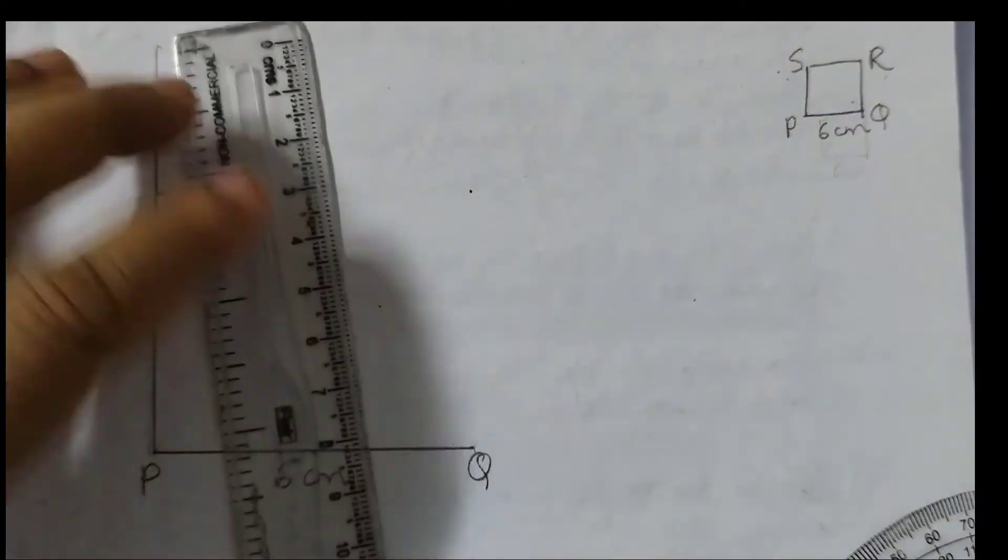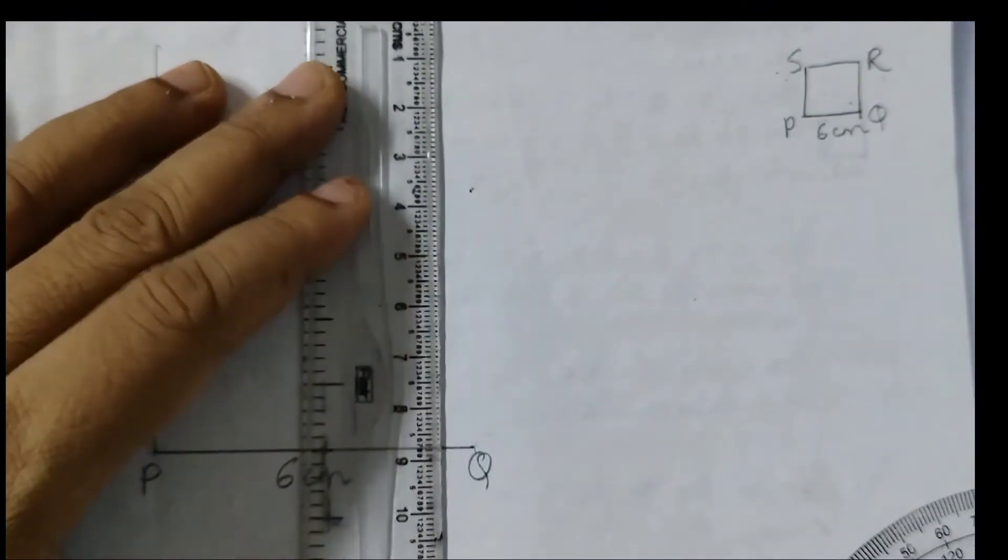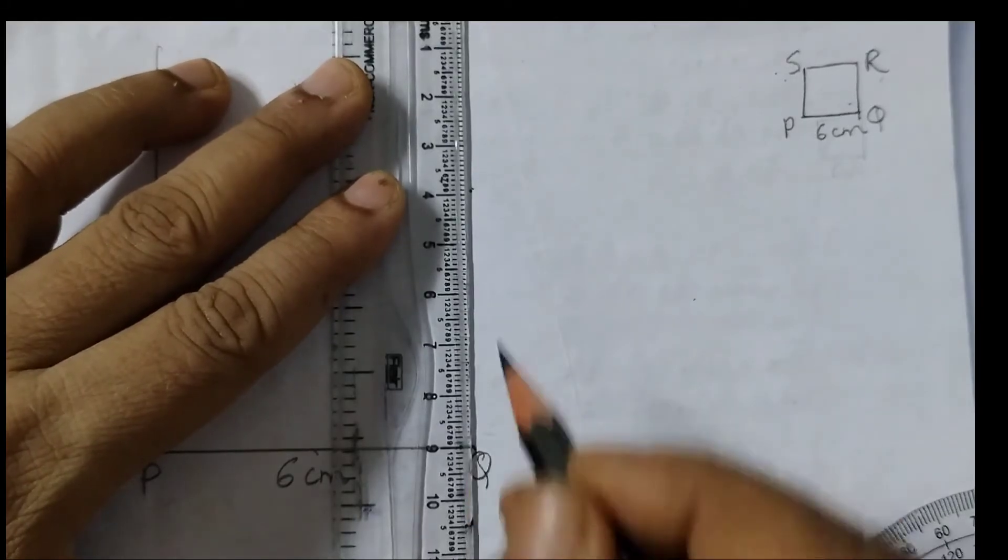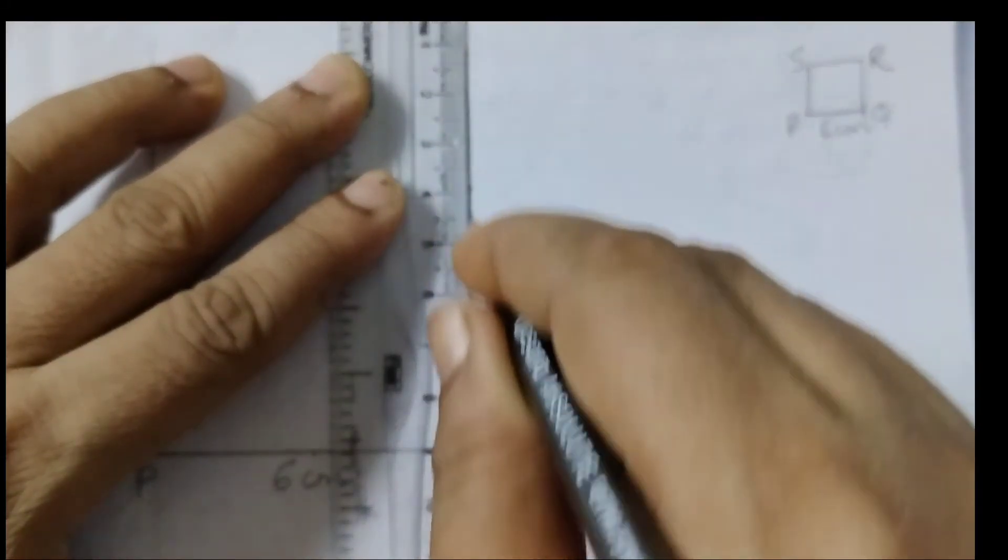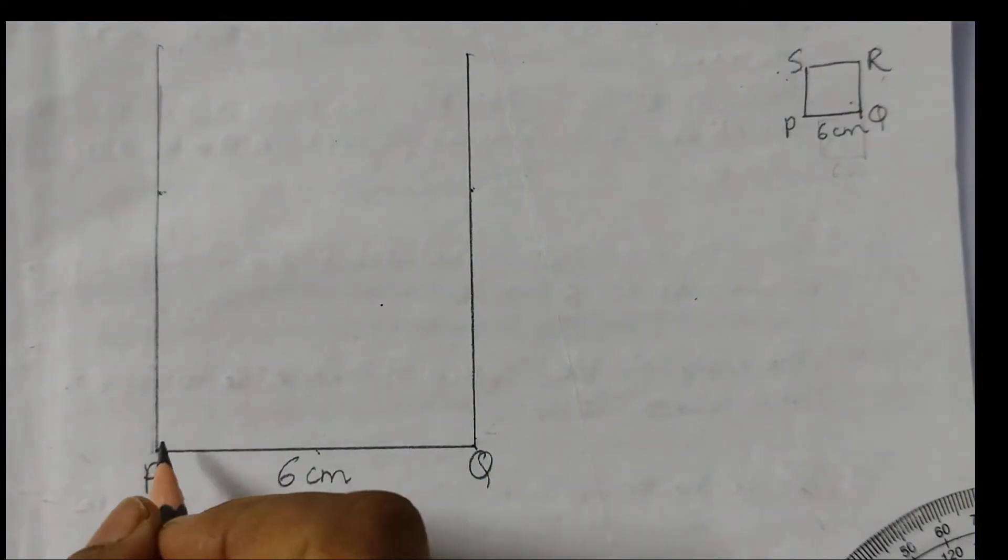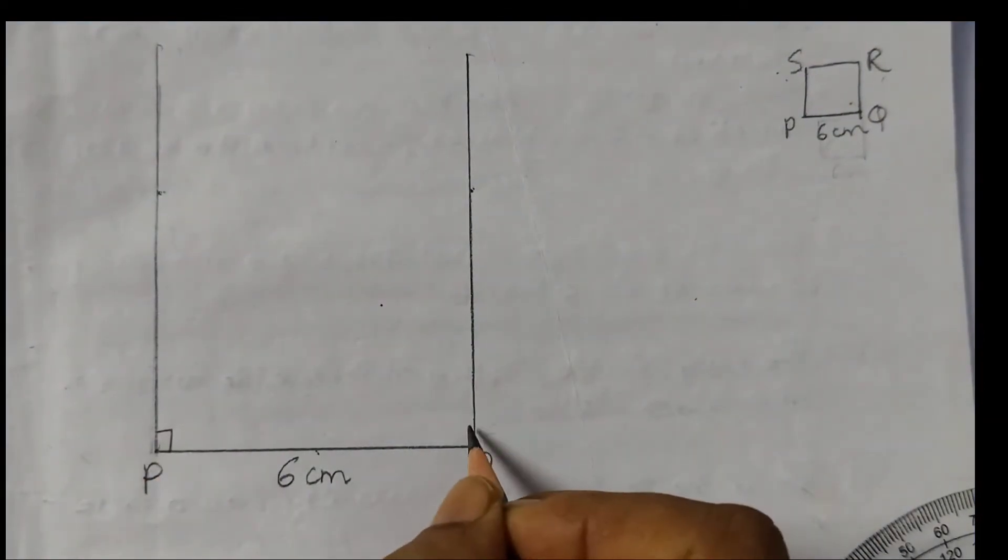Now I will join these two points. Take a sharp pencil when you are doing all this. Okay, so this is 90 degrees. We can show like this 90 degrees. This is also 90 degrees.